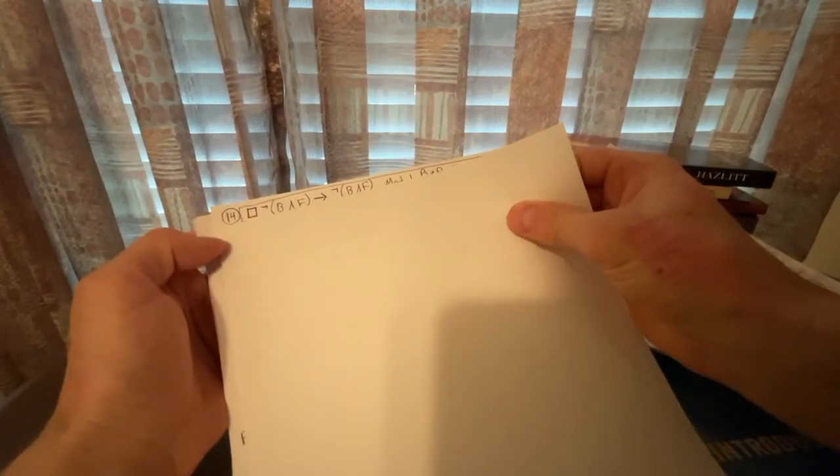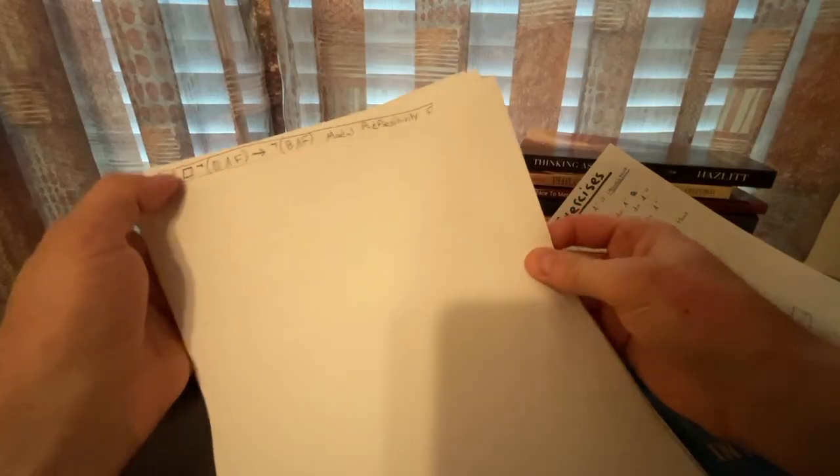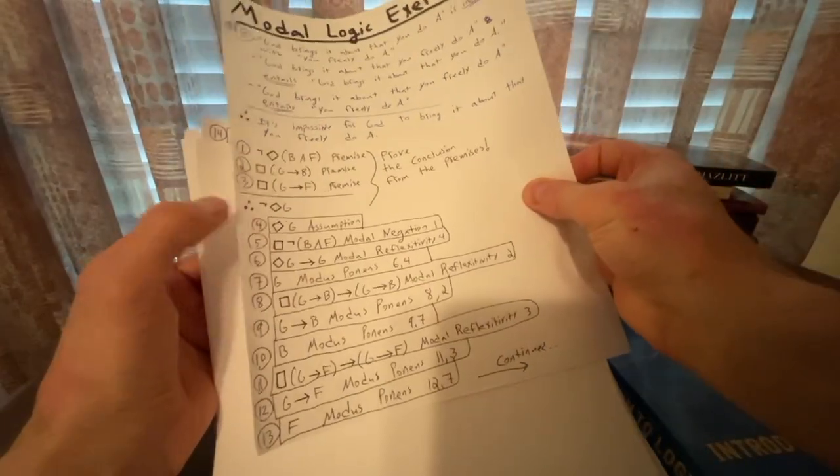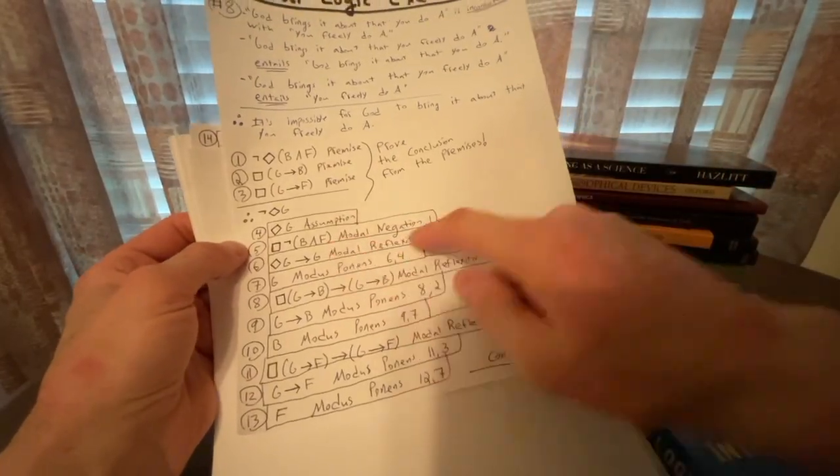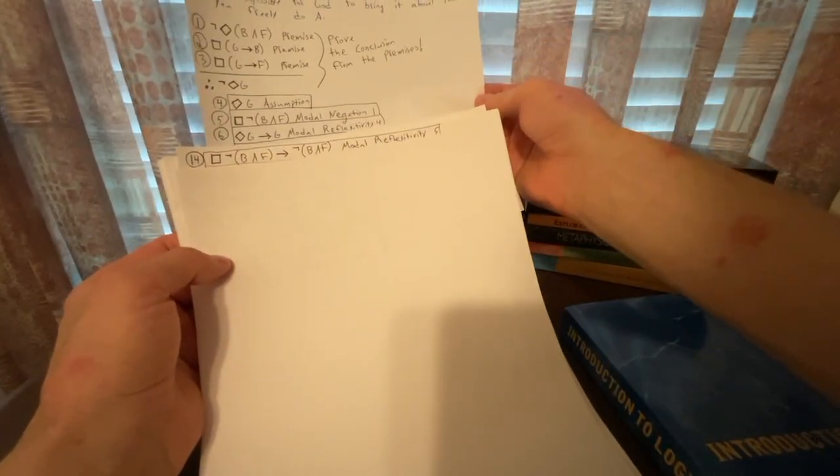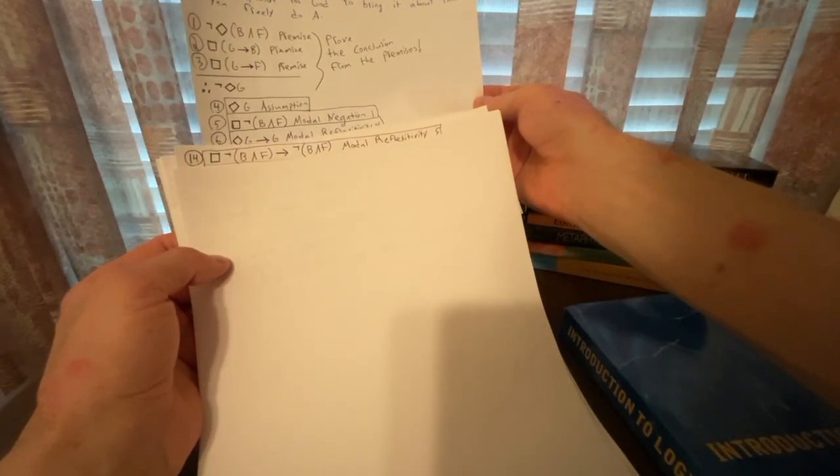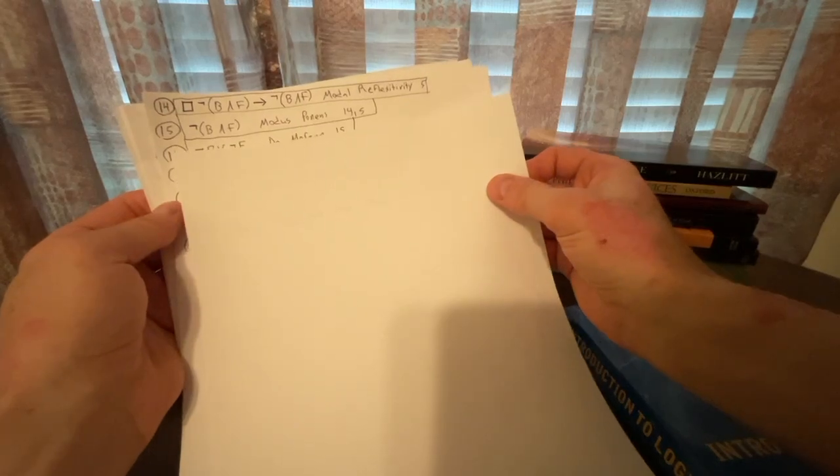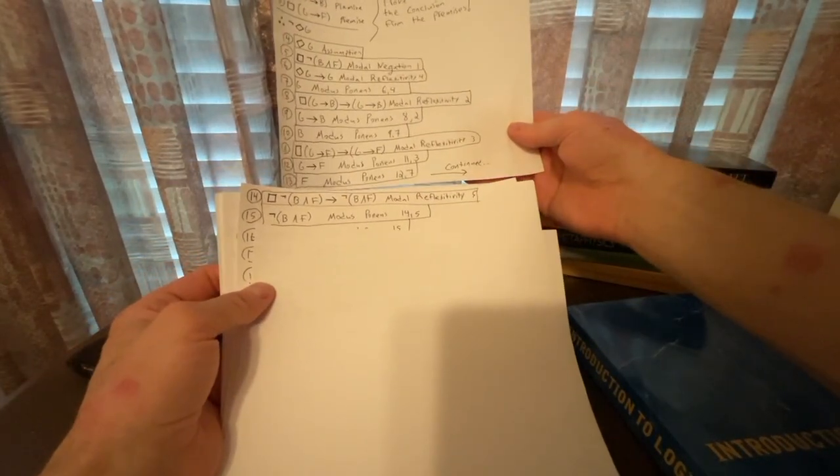So we have line 14, but that's going to be with modal reflexivity on line five. So we're going to recall what line five was there. So there is line five. So we're using modal reflexivity on that. So we can get box not both B and F arrow not both B and F, that's modal reflexivity from line five. And then we can do our modus ponens inference just to get that not both B and F. So that's modus ponens lines 14 which we just derived and that line five which we previously looked at.